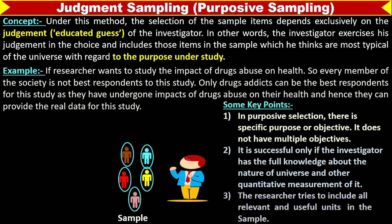Some key points about this method: in purposive selection, there is a specific purpose or objective. It does not have multiple objectives. Our specific objective defines why we want to select the sample and what is the purpose of the study. It is successful only if the researcher has full knowledge about the nature of the universe or other quantitative measurements of it.